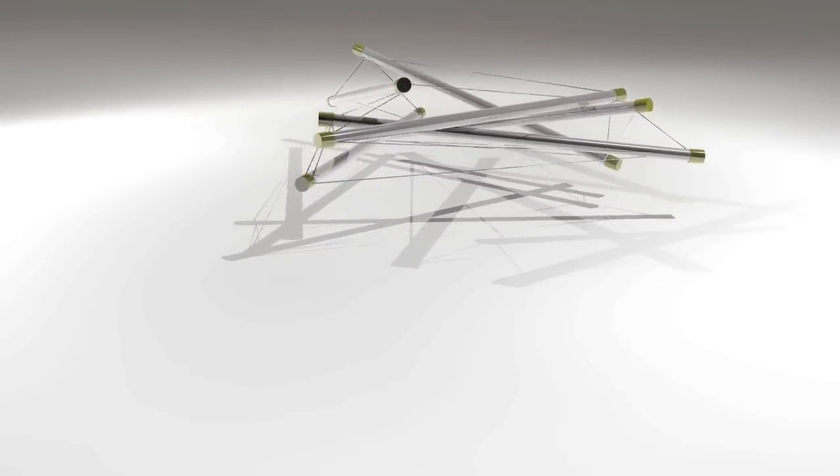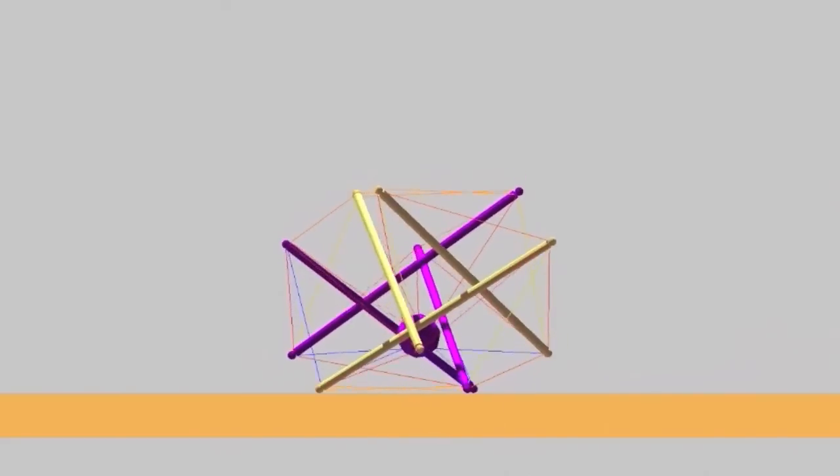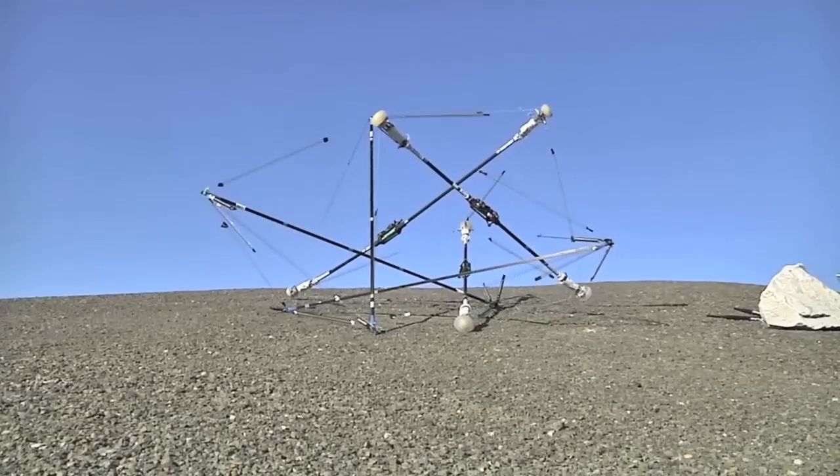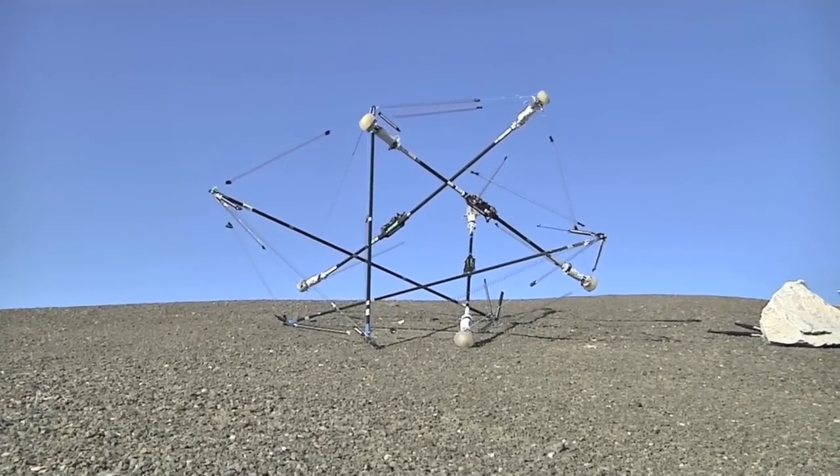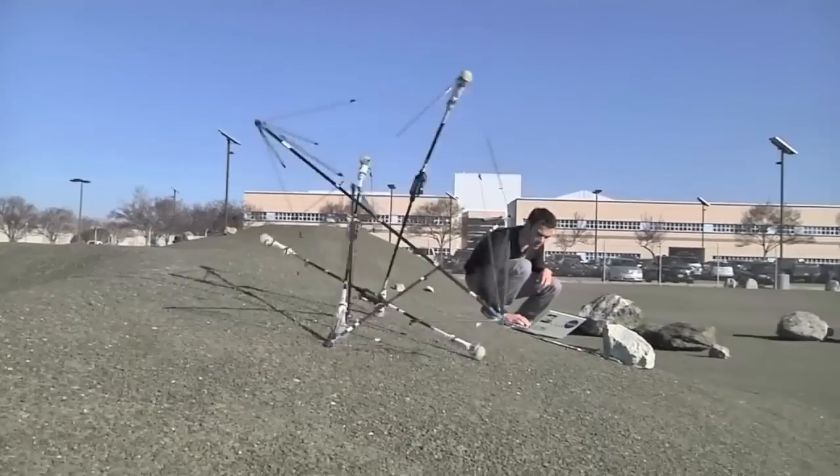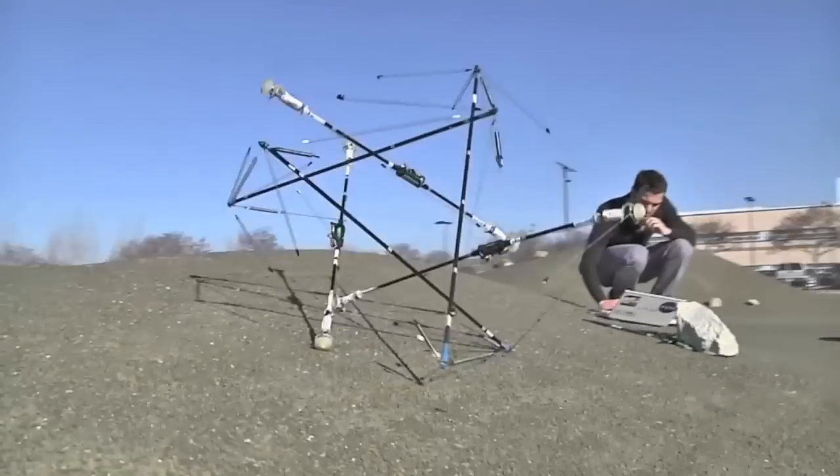We're using tensegrity structures, which are tensile networks that are very shock absorbent and compliant. We're using those to build robots or planetary landers that can land on another planet, absorb that impact shock, and then that very same structure is your robot that enables mobility on the planetary surface.